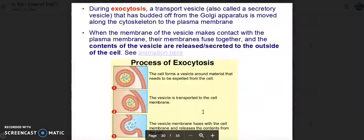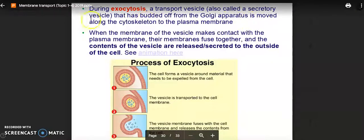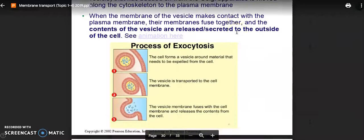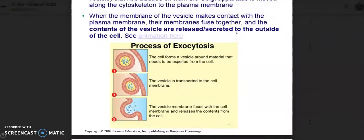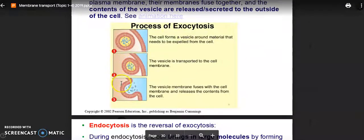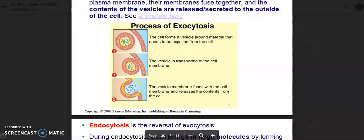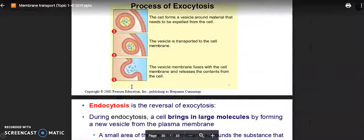During exocytosis, a transport vesicle, also known as a secretory vesicle, that has budded off from the Golgi apparatus is moved along the cytoskeleton to the plasma membrane. When the membrane of the vesicle makes contact with the plasma membrane, their membranes fuse together, and the contents of the vesicle are released to the outside of the cell. In exocytosis, all the stuff is excreted, and then the vesicle just moves into the cell membrane.